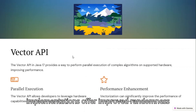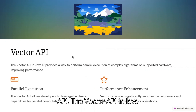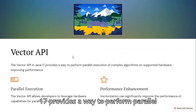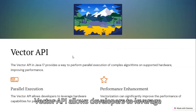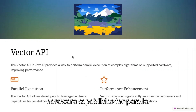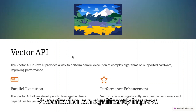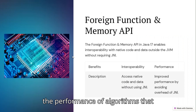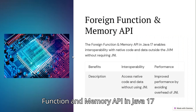The Vector API in Java 17 provides a way to perform parallel execution of complex algorithms on supported hardware, improving performance. It allows developers to leverage hardware capabilities for parallel computation, and vectorization can significantly improve the performance of algorithms that involve vector operations.